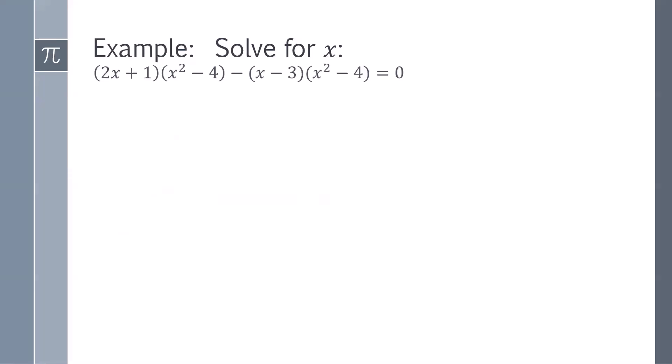Solve (2x + 1)(x² - 4) - (x - 3)(x² - 4) = 0 for x. First we see that both terms have x² - 4, so let's factor that out. From the first term we're left with 2x + 1 and from the second x - 3.